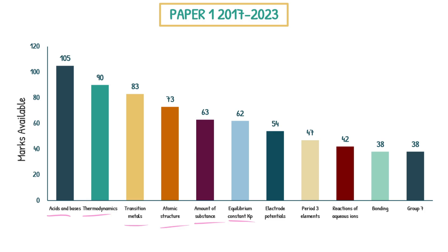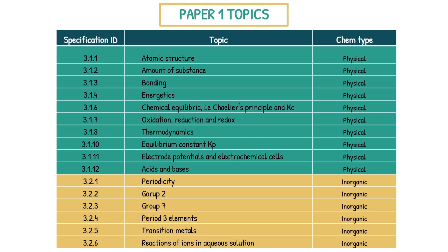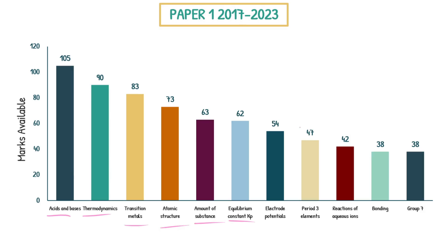Then you obviously have everything that trails off after those. If you remember at the beginning of the video, I said these are all the topics you need to know. But you want to spend your time revising wisely. If you're like me, I had two other subjects — maths and biology. Biology takes up a ton of time and so does maths doing all the past papers. So you want to be as efficient as possible. Obviously there are more topics beyond this; the next one was KC after group seven, and it was like 16 marks across seven years.